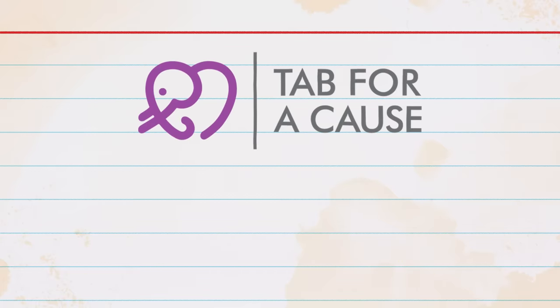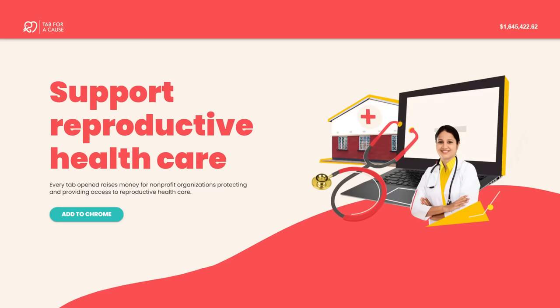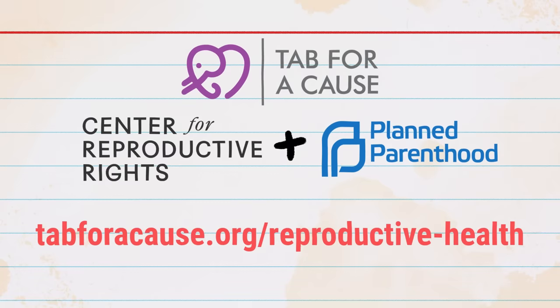Because Tab for a Cause, an awesome browser extension I've used for a while, has now partnered with Planned Parenthood and the Center for Reproductive Rights. If you've never used Tab for a Cause before, go check it out. To date, tabbers have raised more than $1.5 million for non-profits just by browsing the web. This is literally the easiest way to raise money for causes you care about. Download the extension and help support reproductive health care at the link on screen and in the description below.